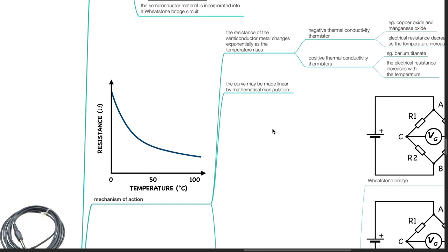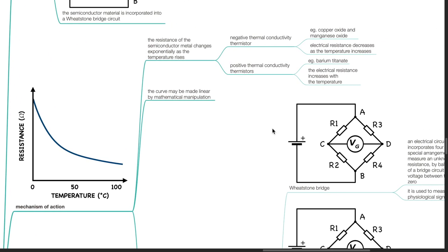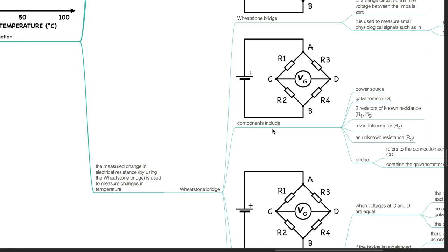Mechanism of action of a thermistor: the resistance of the semiconductor metal changes exponentially as the temperature rises. For a negative thermal conductivity thermistor such as copper oxide or manganese oxide, electrical resistance decreases as temperature increases. For a positive thermal conductivity thermistor such as barium titanate, the electrical resistance increases with temperature. The curve may be made linear by mathematical manipulation. The measured change in electrical resistance using the Wheatstone bridge is used to measure changes in temperature.